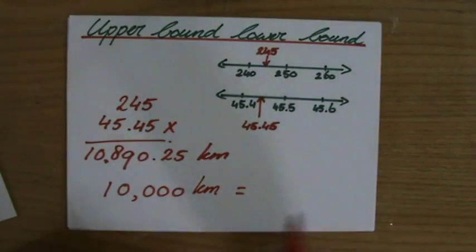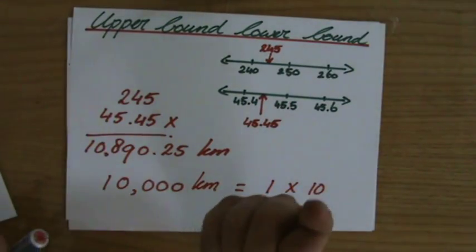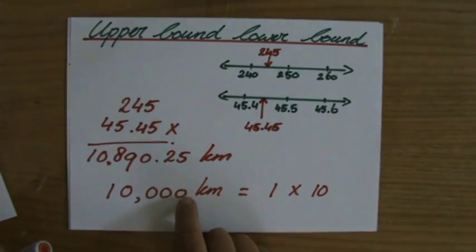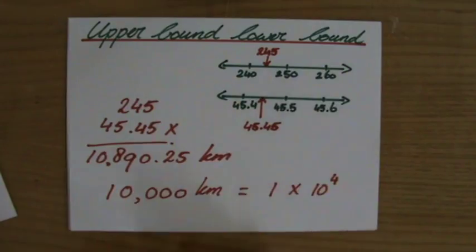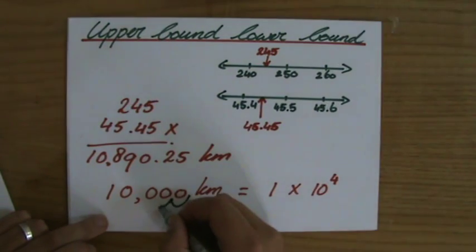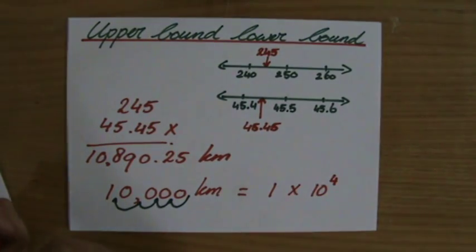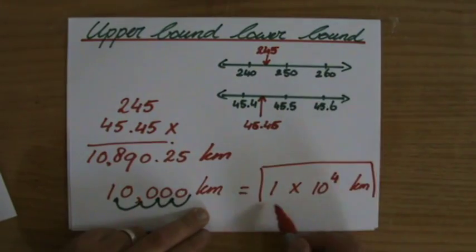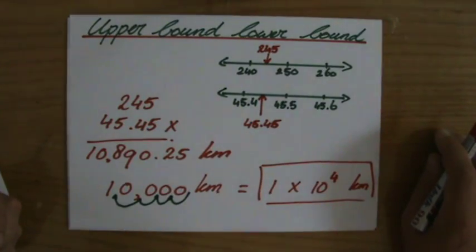My final step is to write it in standard form. That's going to be one times 10 to the power — I move the decimal place: one, two, three, four steps. So 10 to the power four. The least amount of kilometers these people drove altogether, in standard form corrected to one significant figure, is 1 × 10⁴ kilometers.